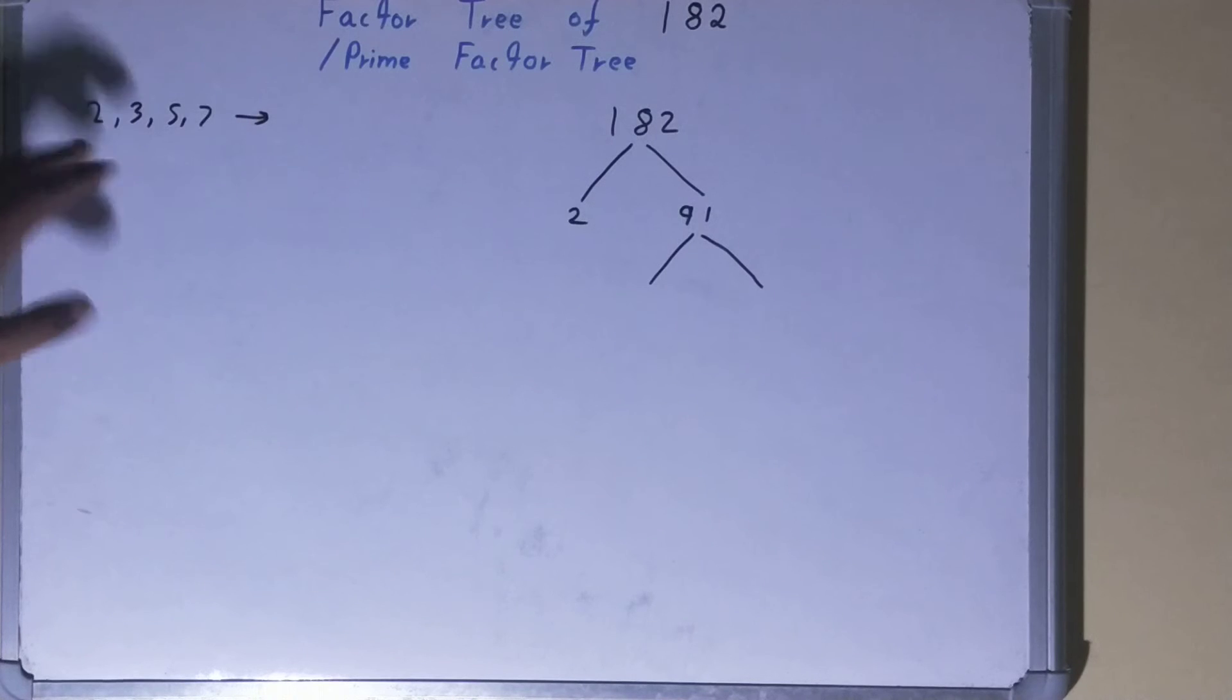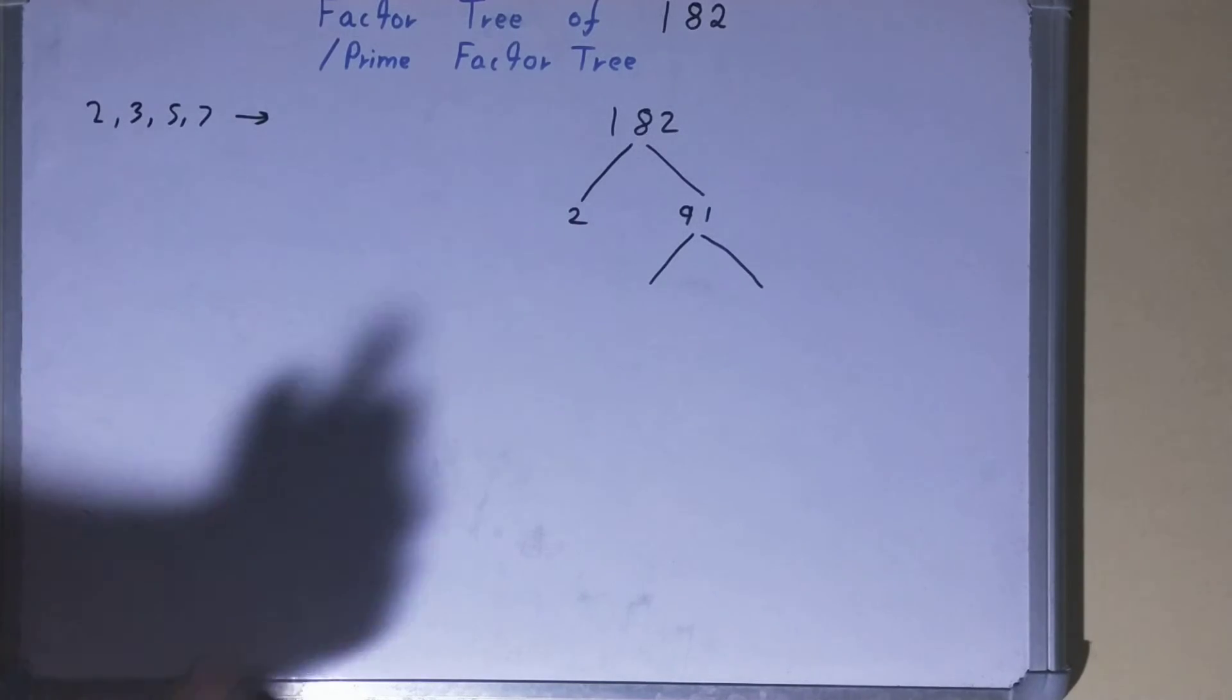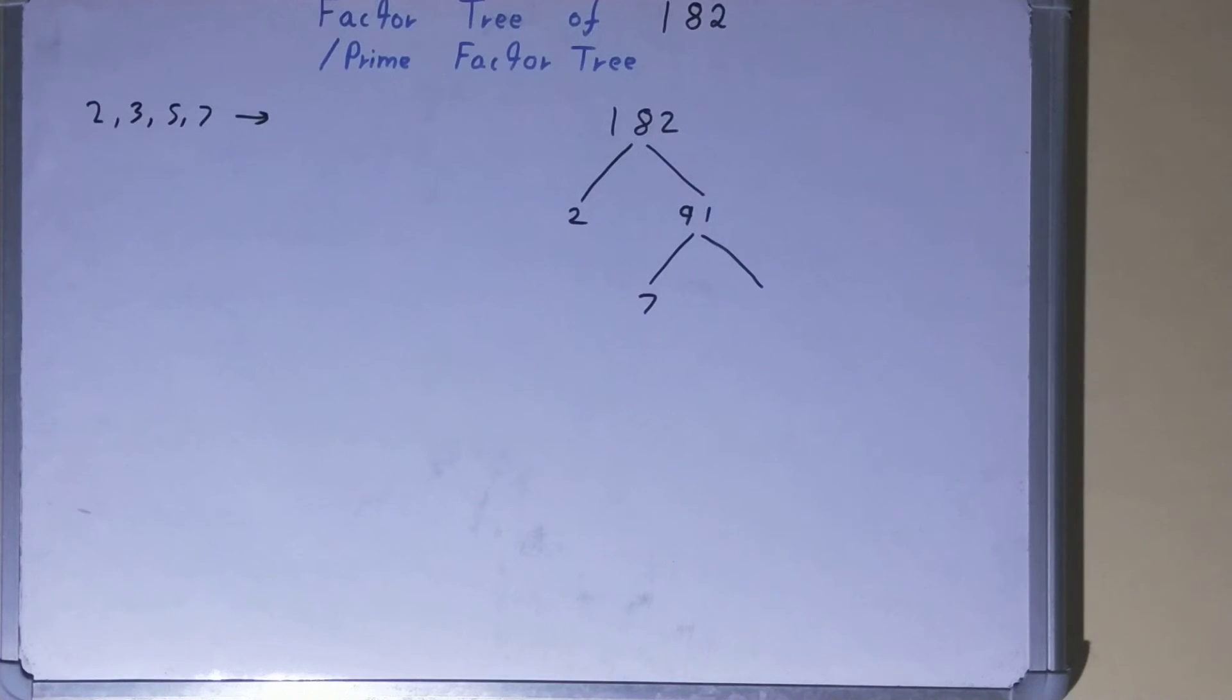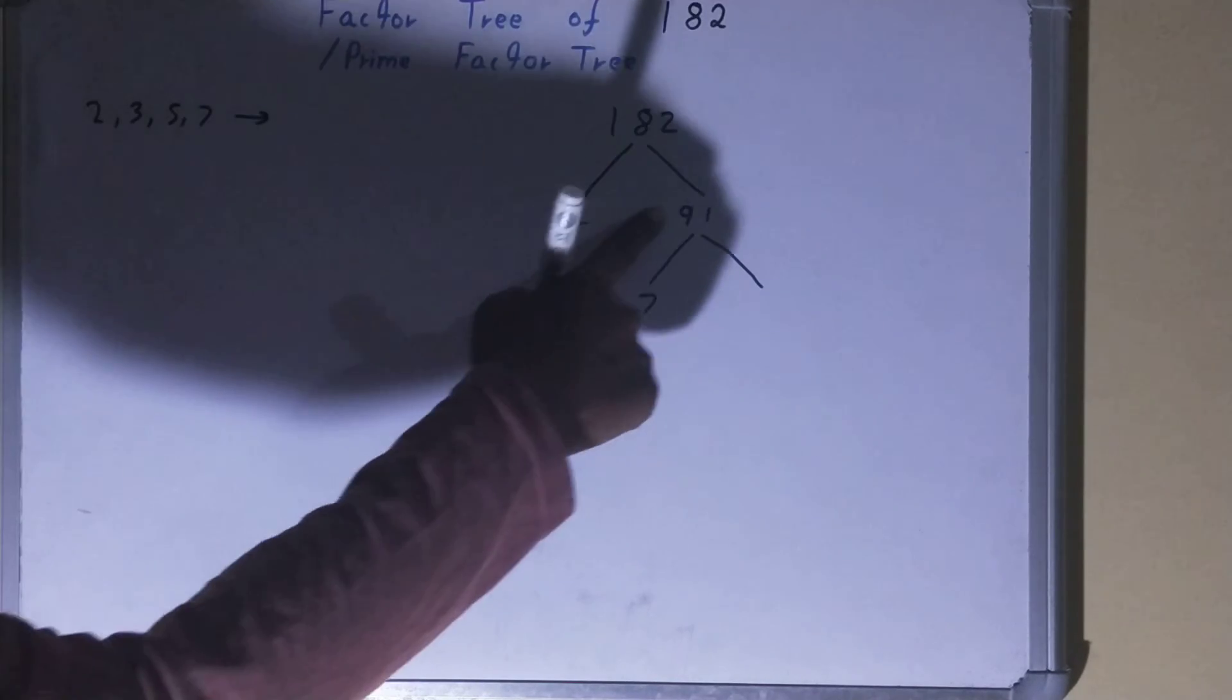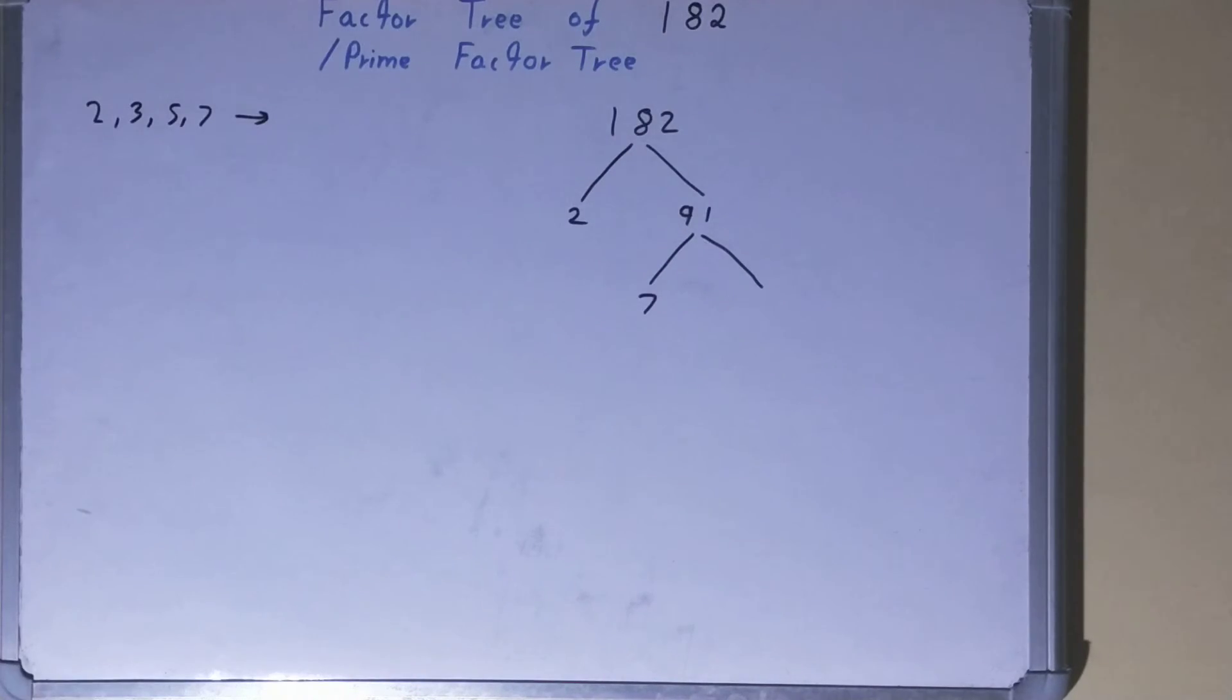We'll check: is 91 divisible by 2? No. Is it divisible by 3? No. Is it divisible by 5? No. Is it divisible by 7? Yes. So one of the numbers will be 7, the other will be whatever we get after dividing. 91 divided by 7, we get 13.